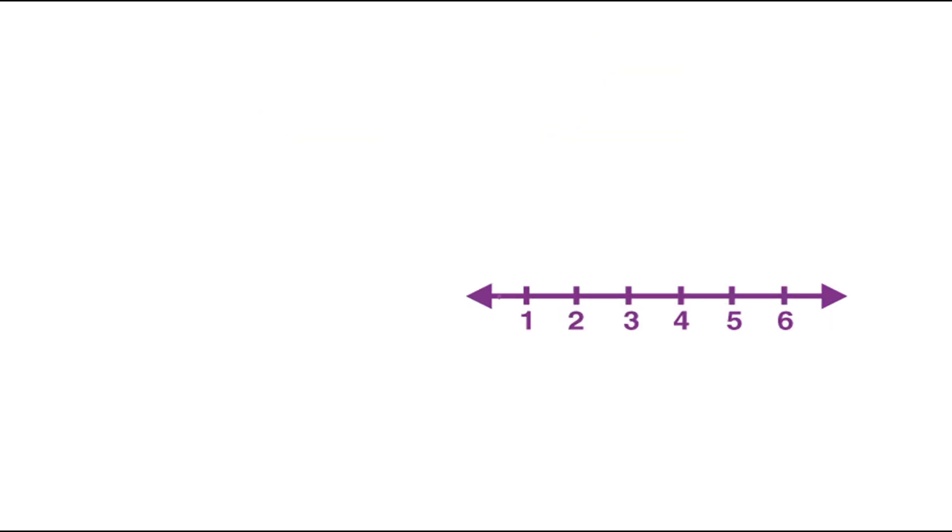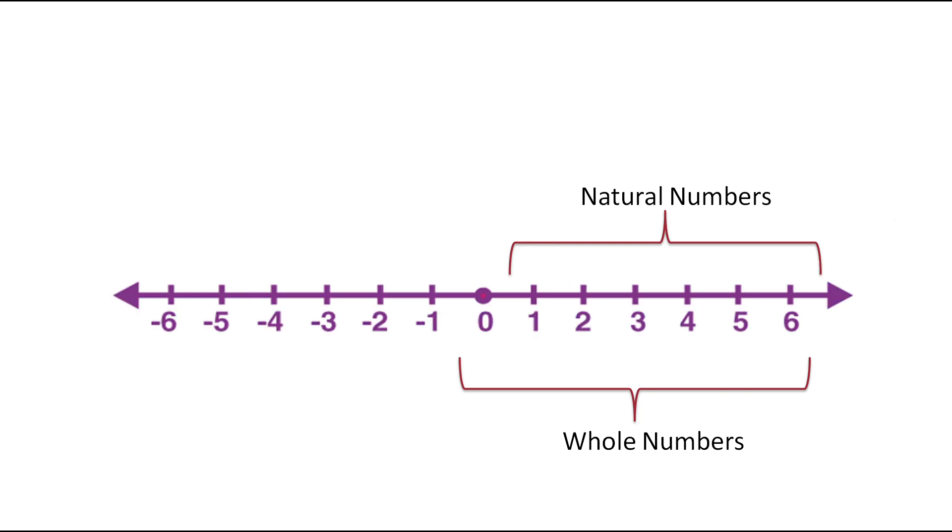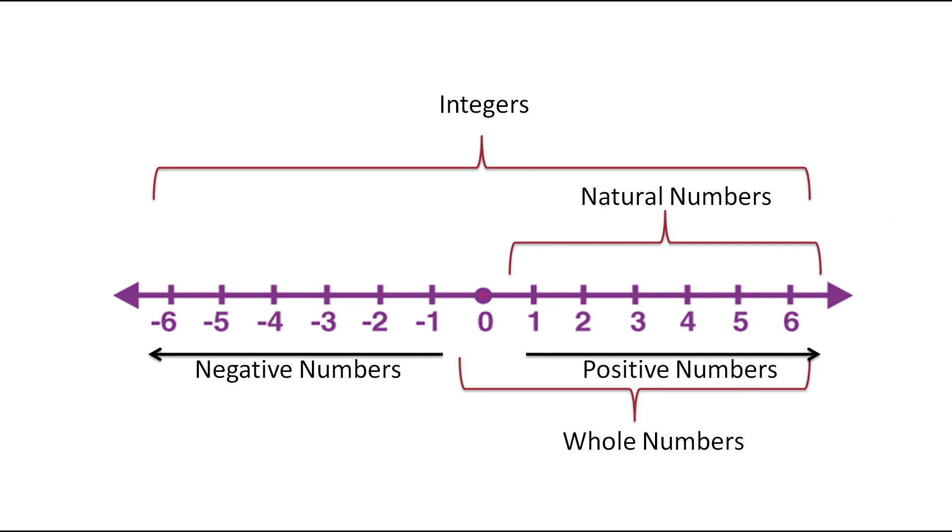These are natural numbers which are starting from 1. Next, when we include 0, these are called whole numbers. Next, when we add negative numbers, then all together is called integers. So here this side is negative numbers and this side is positive numbers.